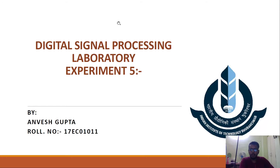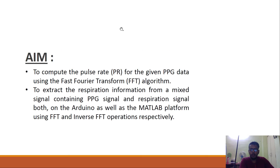Hello everyone, welcome to the fifth video of my DSP lab series. In this, I am going to talk about how to calculate the pulse rate of the PPG signal using Fast Fourier Transform, and then to extract the respiration information from a mixed signal containing PPG and a respiration signal both. This is going to be done on Arduino as well as MATLAB.